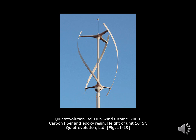The product designs discussed so far have been consumer-grade products. Now we have the QR5 wind turbine designed by Quiet Revolution Limited from 2009. Larger objects still have to be designed and serve a function, but wind turbines are often thought of as giant eyesores in communities. Quiet Revolution Limited made an attempt at creating a functional wind turbine that was also much more pleasing to the eye.